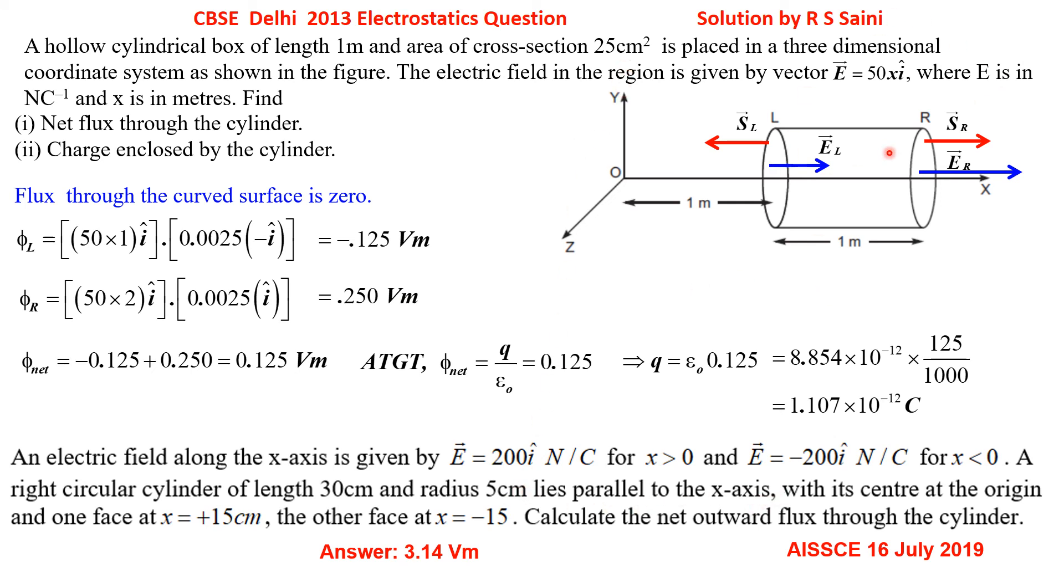So that the center of the cylinder lies at the origin. Center lies at the origin. Shift this cylinder to this point, so that left face lies in the negative region, right face lies in the positive region. And I hope you will be able to solve it further. And the answer is already given, 3.14 volt meter. If you are able to do it yourself, that means I have succeeded in my mission.